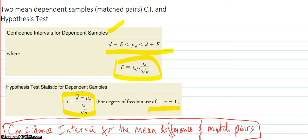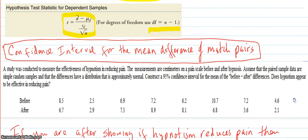The degrees of freedom for this one got chopped off. The df for this one is also n minus one. So let's do our example.